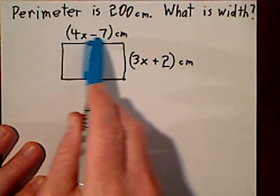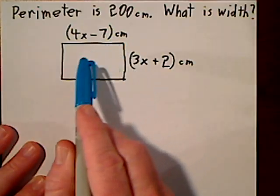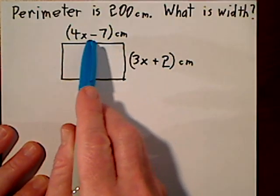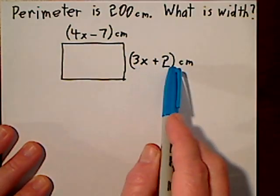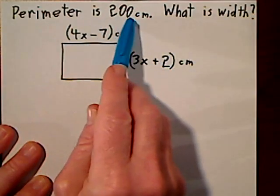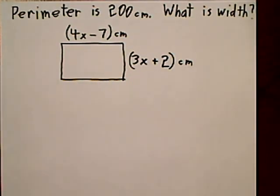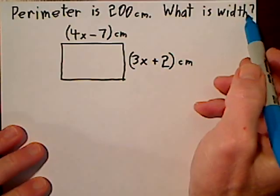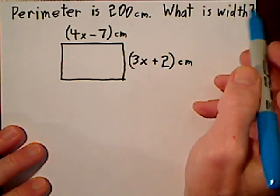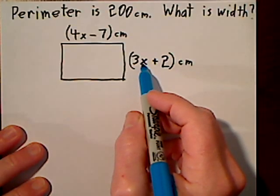It might be confusing to see the length described this way but that's a valid way to describe the length and this describes the width. But the perimeter refers to all four sides so they want us to find out the exact width, so we're going to have to figure out what x is.